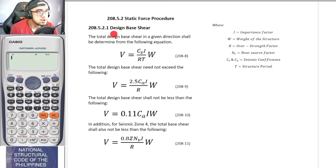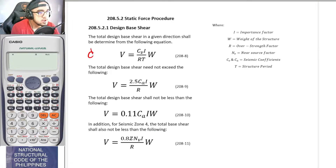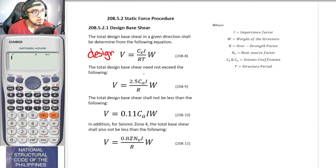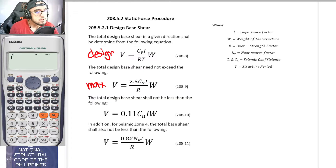For the design base shear, we have four equations. The primary equation is V = CvI / (RT) times W. This value must not exceed the maximum base shear, and it should not be less than the minimum base shear value.